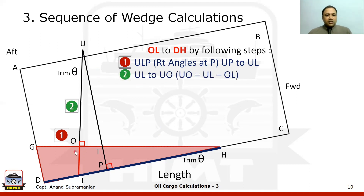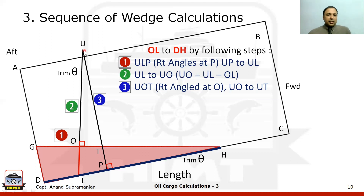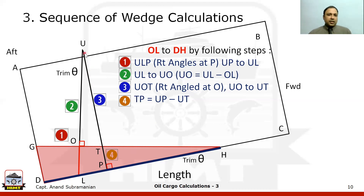Once we have UL, and we already have OL from the numerical, the next step is to find out UO — the observed ullage — where UO = UL − OL. The next step is to find the ullage parallel to the aft bulkhead. For this we use triangle UOT, right-angled at O, where the angle is trim theta. From cos θ = UO / UT, we get UT = UO × sec θ. Since we know UP, TP = UP − UT, which is the sounding of the oil parallel to the aft bulkhead.